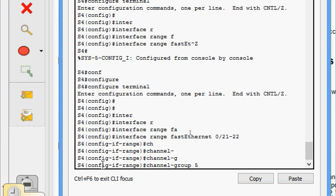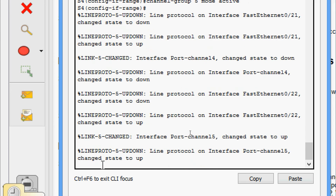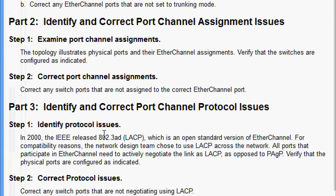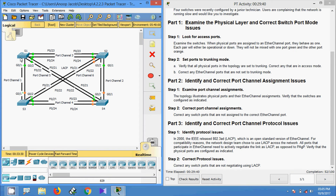Now Part 3: identify and correct port channel protocol issues. Step 1 — identify protocol issues. In 2000 the IEEE released 802.3ad, which is LACP, an open standard version of EtherChannel. For compatibility reasons, the network design team chose to use LACP across the network. All ports participating in an EtherChannel need to actively negotiate the link as LACP, as opposed to PAgP. We will verify on S1.